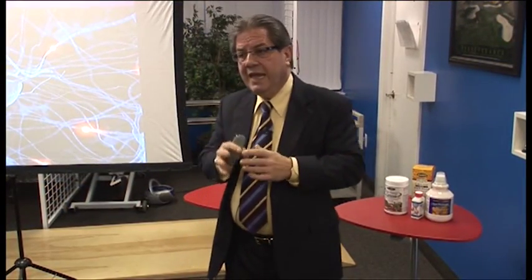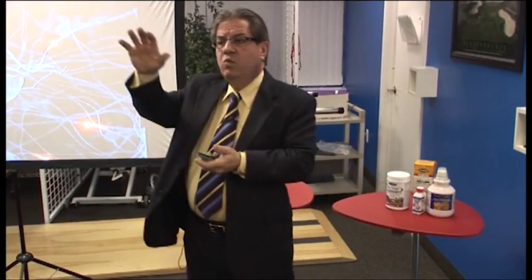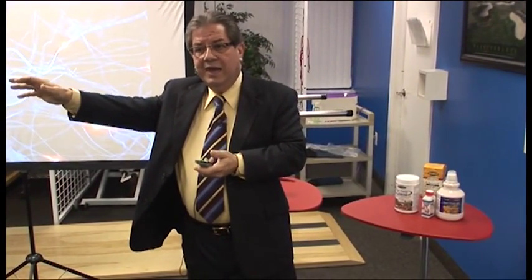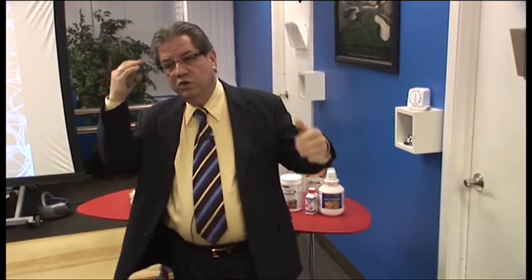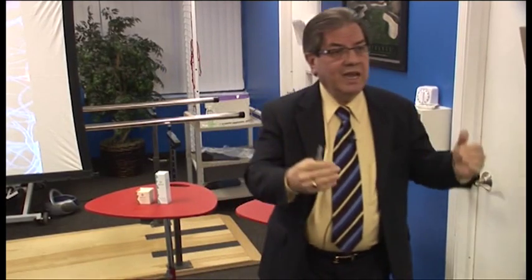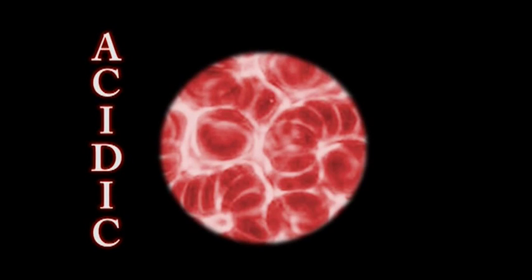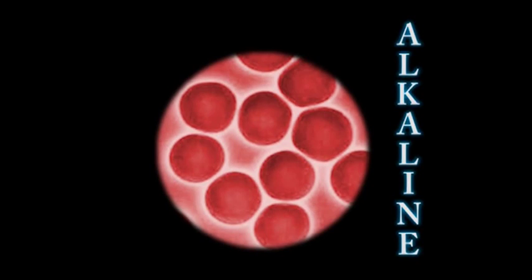What we're doing with pH — in a very simple explanation — is adding negative alkaline ions and balancing out the electricity in the body. When that happens, your neurons start firing properly and your cells start communicating with each other properly. Acidic blood cells are all stuck together, while alkaline blood cells bounce off each other.